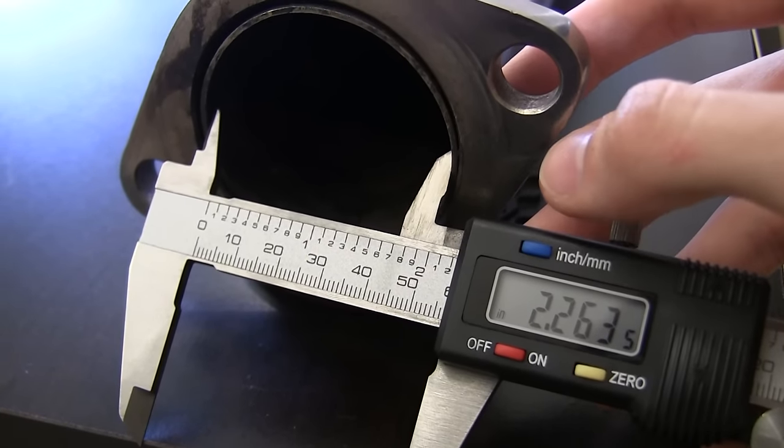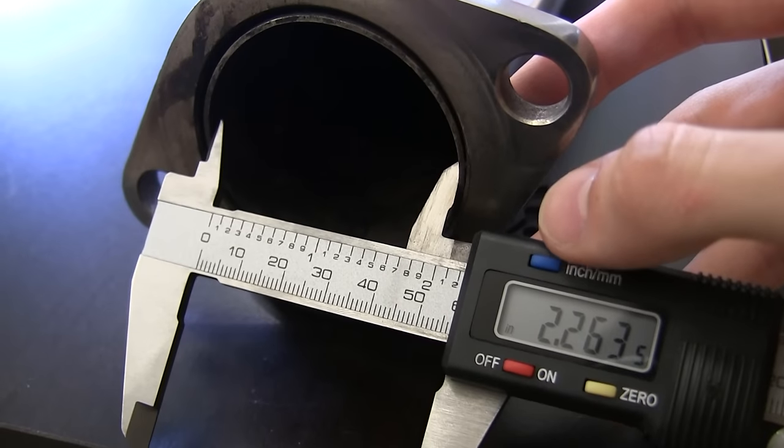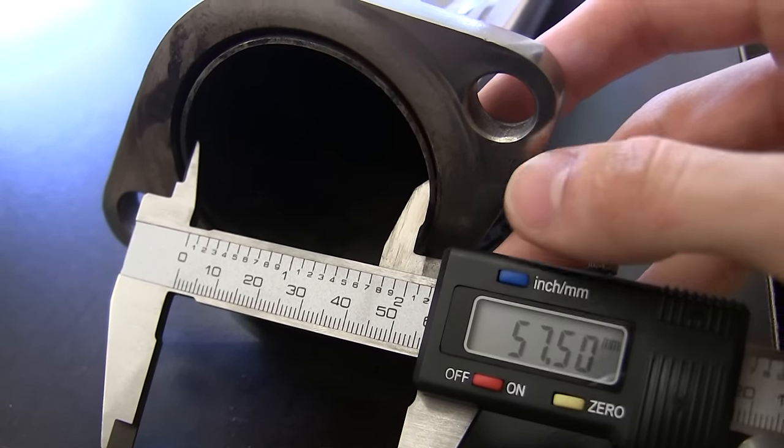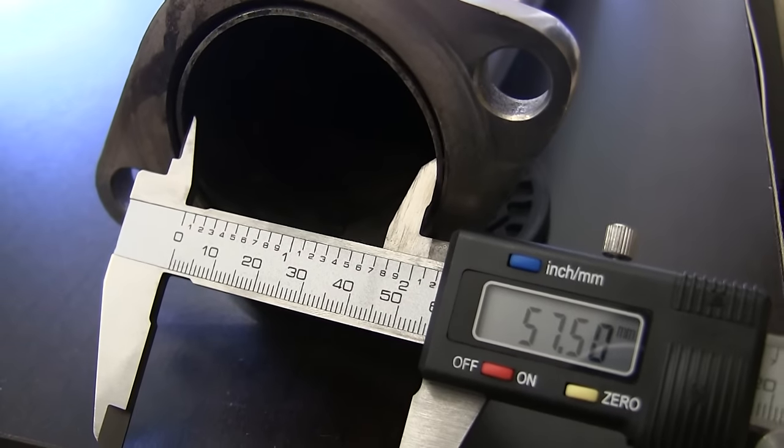So the inner diameter of the Yonaka exhaust looks to be about 2.26 inches in diameter, or 57.5 millimeters.